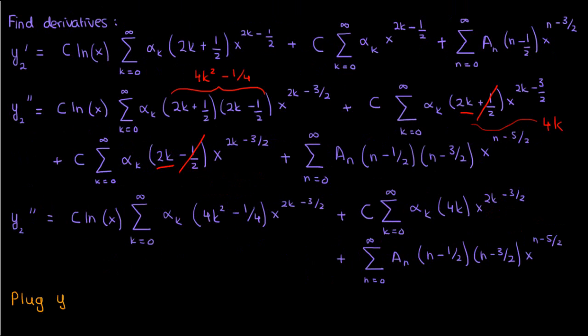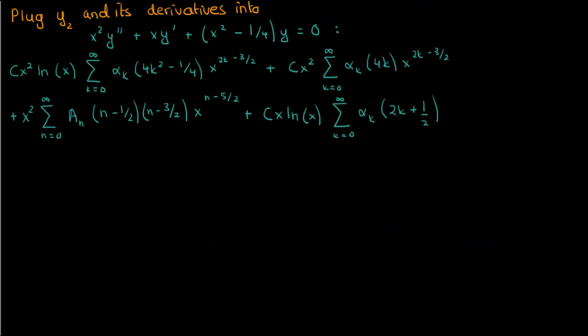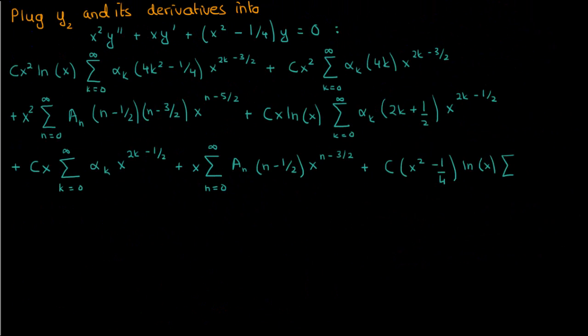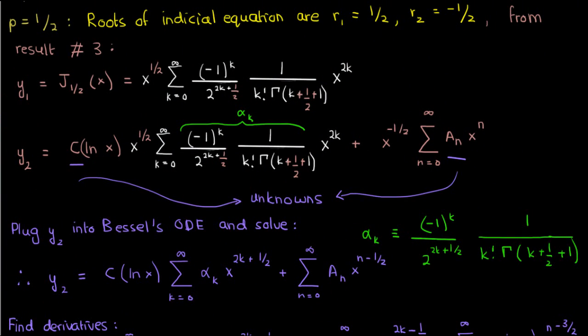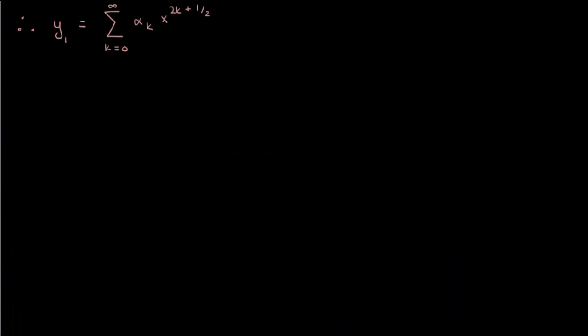Now we're ready to plug y2 and its derivatives into Bessel's equation. We can simplify the resulting expression by recalling the first solution y1 for half integer order and the definition of alpha sub k, so that y1 equals the sum from k equals 0 to infinity of alpha sub k times x to the power 2k plus 1/2, with x to the power 1/2 moved inside the summation.